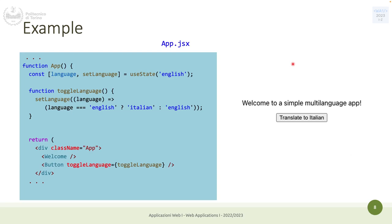There is a Welcome component that will print 'Welcome to Simple' and a button with a function to toggle the language. The toggle language function will simply say: if the language is English, go to Italian and vice versa — just a simple toggle. This is a normal state that by default is set to English, so when the application first renders you see a text and a button.